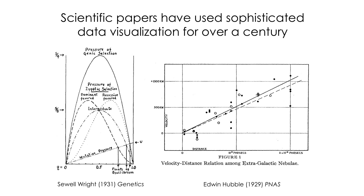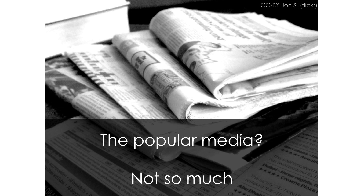Scientific papers have been using data graphics for a very long time — well over a century — using sophisticated plots and diagrams that show relationships among multiple variables. On the left here, we see a figure from Sewell Wright's magnum opus on population genetics. At the right, we've got Edwin Hubble's paper showing the observations that demonstrated that the universe was expanding — both almost 100 years ago.